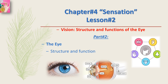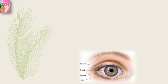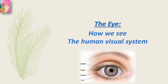In Lesson 2 we are supposed to complete the structure and functions of the eye. In this video we will cover Part 2, starting with the eye and having a general discussion on its structure and function. Today's topic is the eye — how we see an object, how we see the world, and the human visual system.